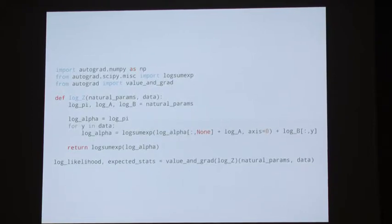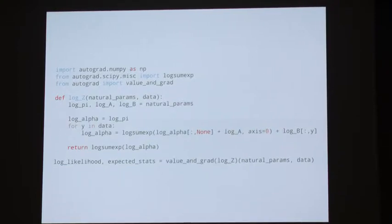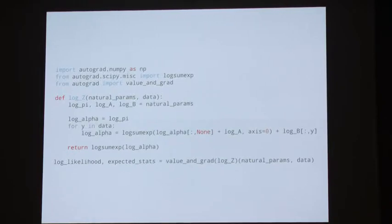Here's a tiny Python program using Autograd that computes the log normalizer of an HMM as a function of the natural parameters. Going line by line, we unpack the parameters: the initial state distribution, the transition matrix, and the discrete observation distribution. Then we have a very simple computation — without even saving any messages, we go through the chain and sum in one direction, and at the very end take a log-sum-exp. This computes the log normalizer. If we call grad on this, that gives us a new function that computes the expected sufficient statistic. Math told us so.